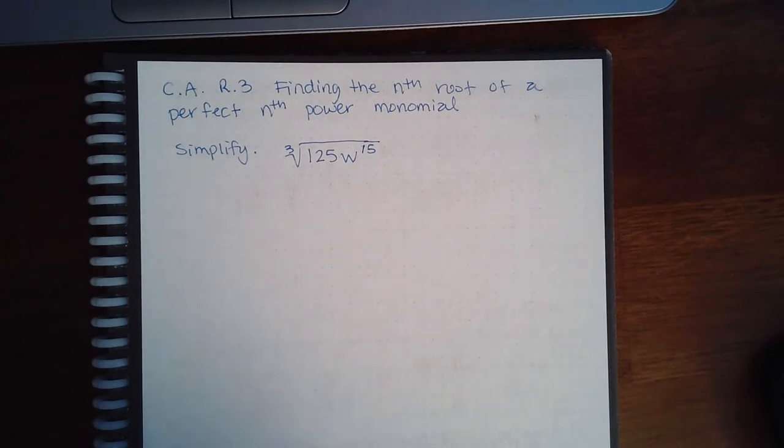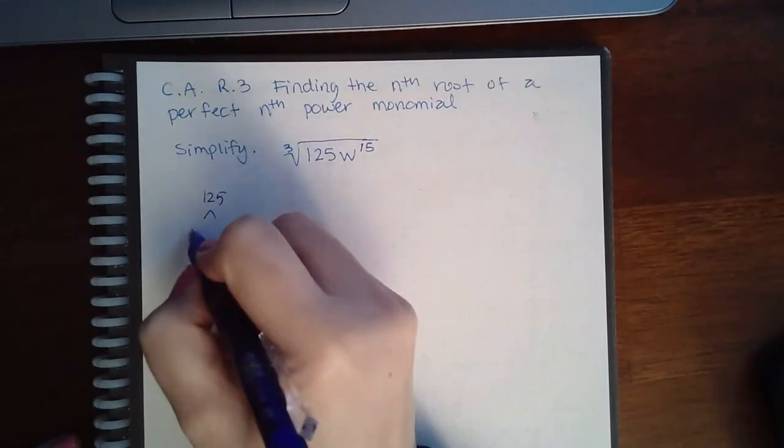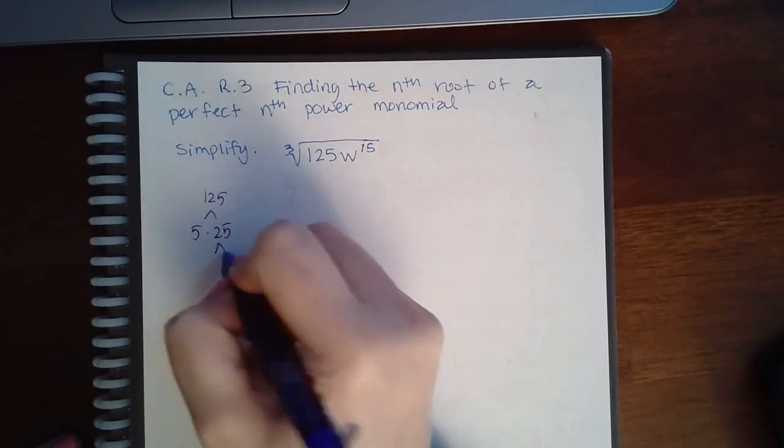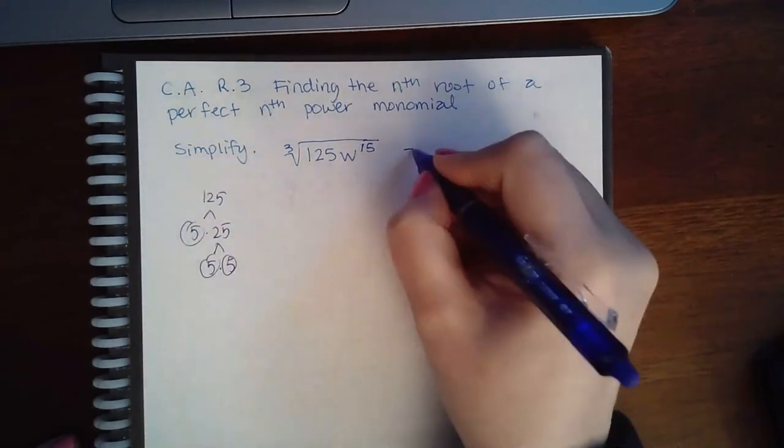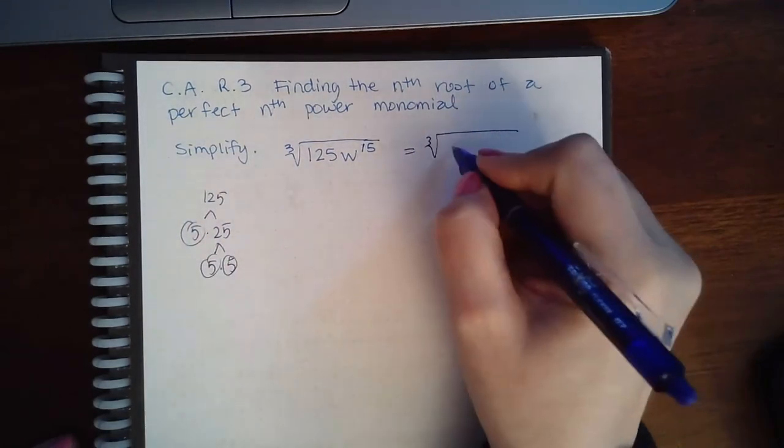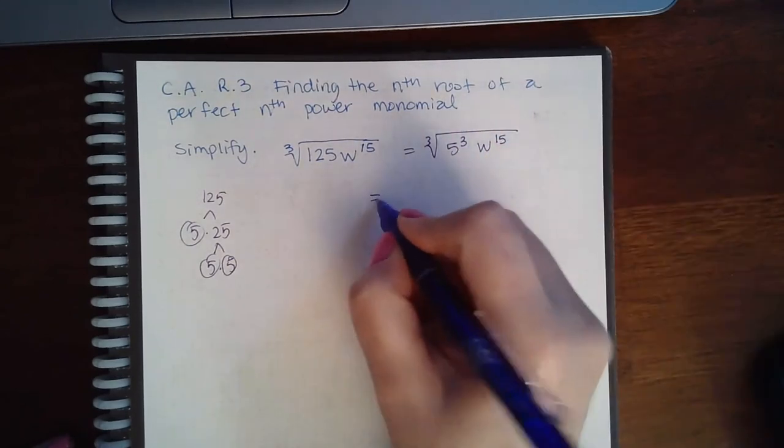So 125 is 5 times 25, which is 5 times 5, and each of these is a prime number. This can be broken up into 5 cubed and w to the 15th.